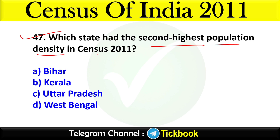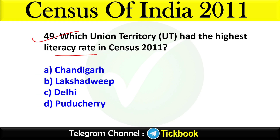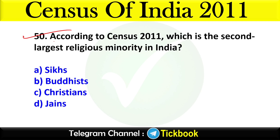Question forty-seven: Which state had the second highest population density in Census 2011? Option number D is the right answer: West Bengal. Question forty-eight: Which state had the highest gender literacy gap in Census 2011? Option number A is the right answer: Rajasthan. Question forty-nine: Which union territory had the highest literacy rate in Census 2011? Option number B: Lakshadweep.